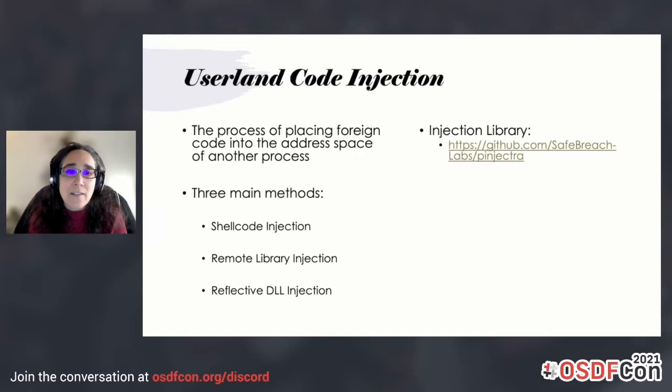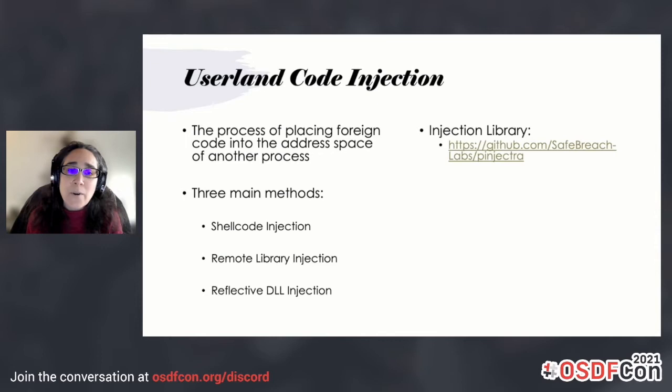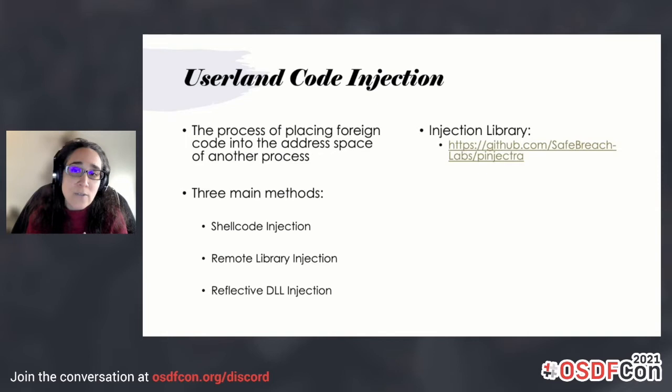Malware wants to have code running long-term on the system and blend in. One way it's able to do that is by using code injection. There are many different ways of injecting code from a malicious process into a target process's address space, but we're only going to cover three methods, which are the ones normally found in the wild. If you want to look at other injection methods, there is a nice library called Pinjectra that you can download, and it has over 12 different methods available for updated Windows 10 machines.